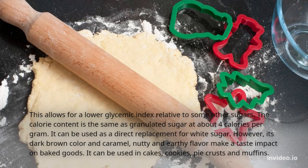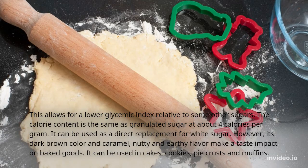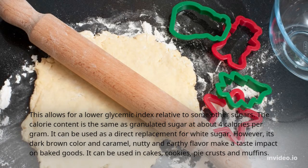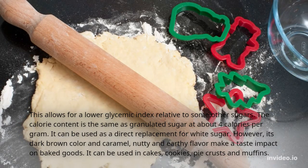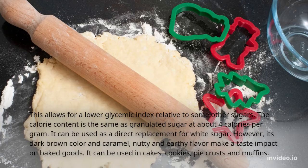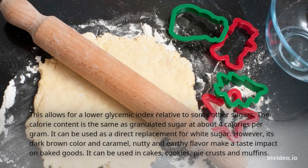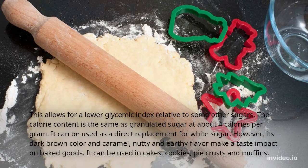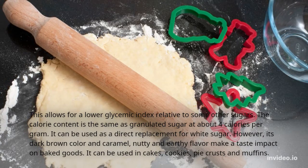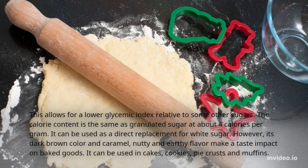The calorie content is the same as granulated sugar at about 4 calories per gram. It can be used as a direct replacement for white sugar; however, its dark brown color and caramel, nutty, and earthy flavor make a taste impact on baked goods. It can be used in cakes, cookies, pie crusts, and muffins.